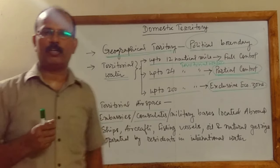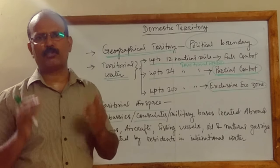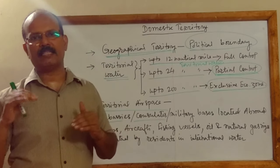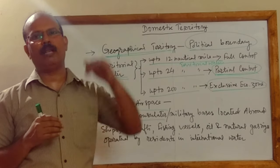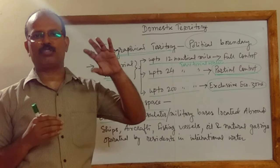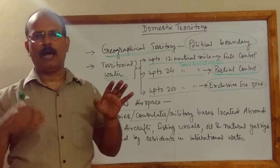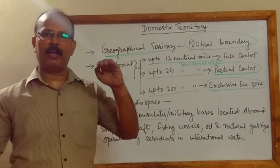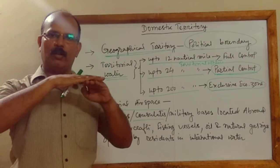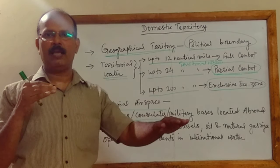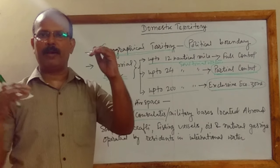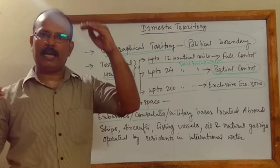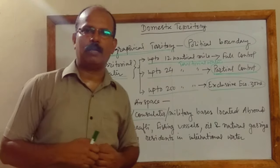Territorial airspace is also considered part of domestic territory. Even though there is no international agreement on territorial airspace, generally the flying zone at a height of 7.5 km to 12 km is considered the domestic territory of a country. This is because any foreign country's flights wanting to use that airspace must take permission from that country; if permission is denied, they cannot fly through.